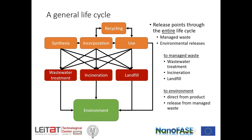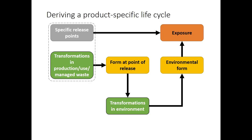This is a general model of an ENM product life cycle. To apply this to a specific product, we study the product value chain — summarized as synthesis, incorporation, use, and recycling — to identify points at which environmental release may occur. Releases may occur directly from the product value chain during use, for example nanomaterials in sunscreens, or from the product value chain into managed waste facilities such as wastewater treatment, incineration, and landfill. For example, ENMs impregnated into textiles may be released into domestic wastewater during washing and ultimately into the wastewater treatment system and from there into the environment.